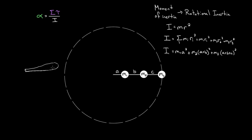Think about a baseball bat. If you swing it from the handle end where that end is the axis, it's hard to rotate — you've got all this heavy mass at the far end. But if you turn it around and swing it from the fat end, now most of the mass is near the axis. The radius of that mass is smaller, it contributes less to the moment of inertia, and it's easier to swing. You can also reduce the moment of inertia by simply reducing the masses.